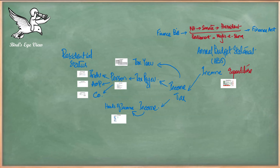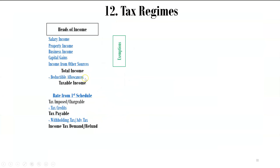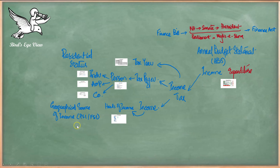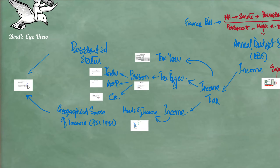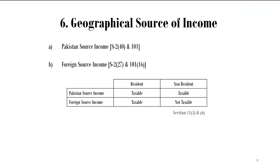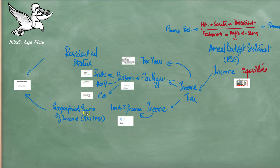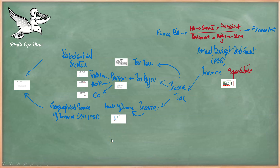Determining residential status is necessary because of another attribute of income: geographical source of income, which is either Pakistan-source or foreign-source. Income from every head of income could be either Pakistan-source or foreign-source. This geographical source of income is directly linked to the residential status. If you are a resident, both your Pakistan-source and your foreign-source income are taxable. If you are a non-resident, only your Pakistan-source income is taxable — foreign-source income is not taxed in Pakistan. Each head of income — salary, property, business — has its own criteria for determining geographical source.